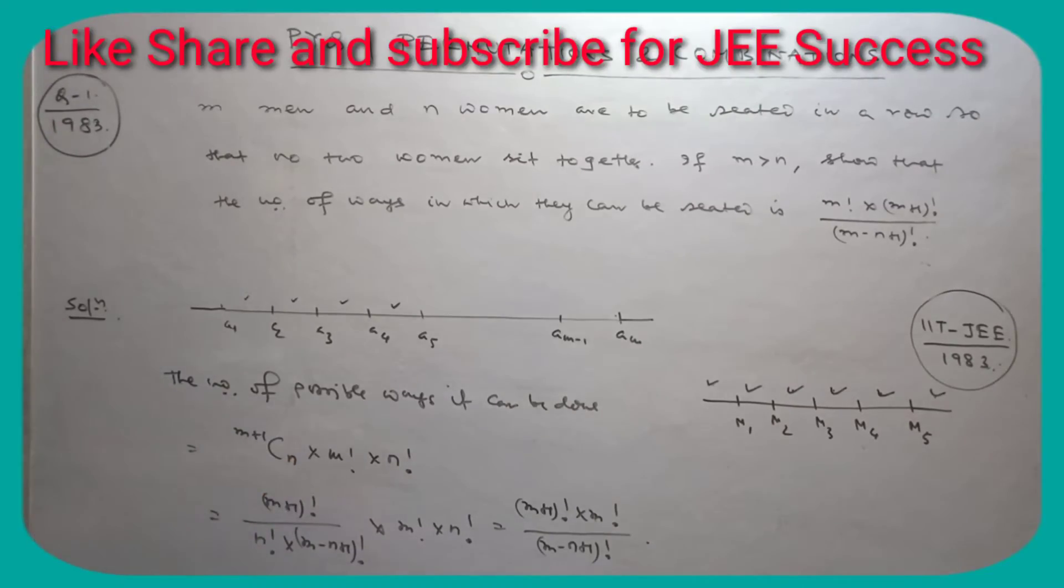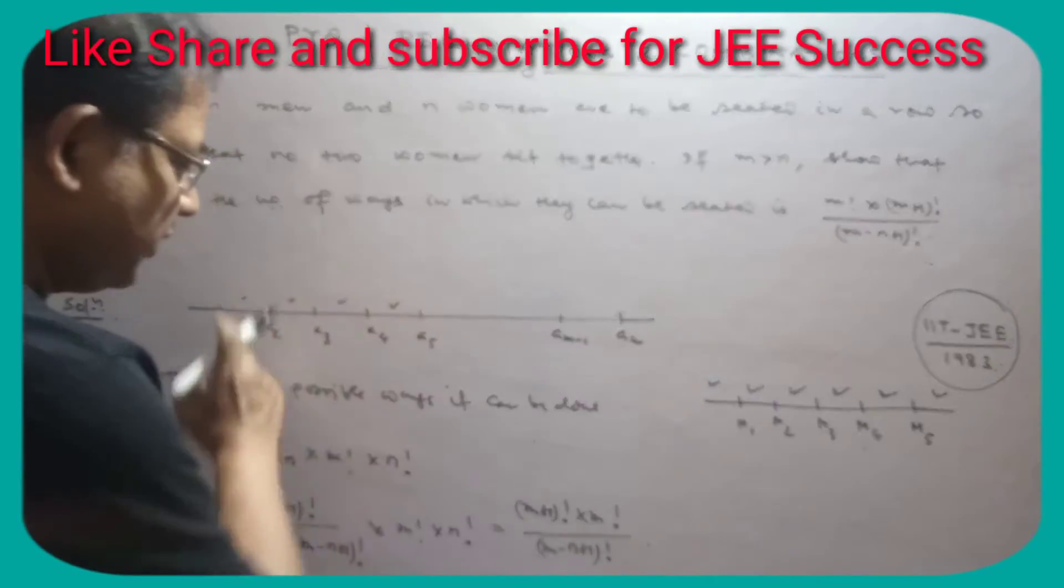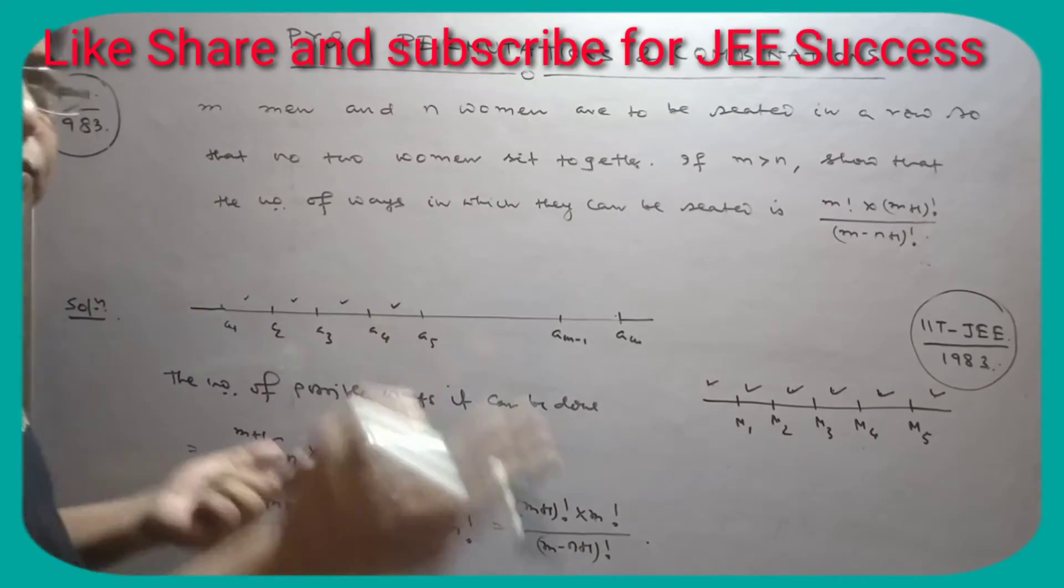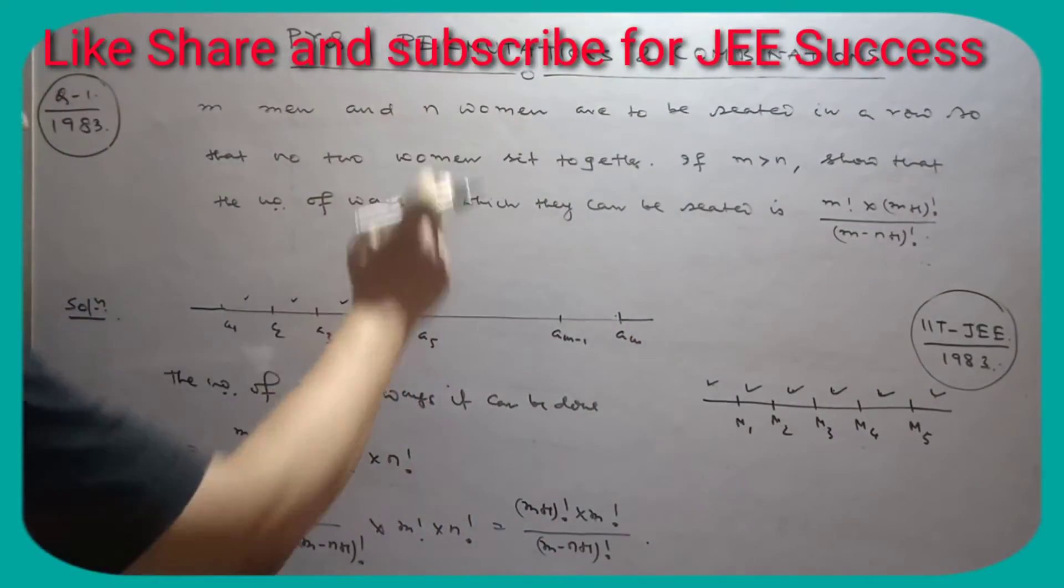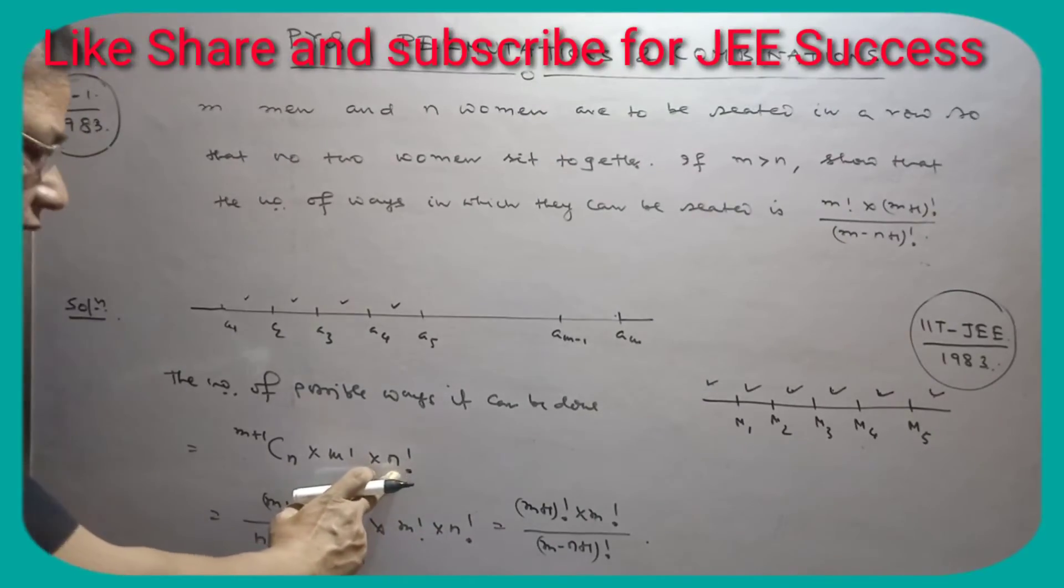N plus 1 choose N. And the N men can arrange themselves in N factorial ways. The N women can also arrange themselves in N factorial ways.